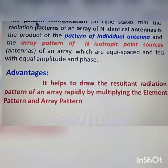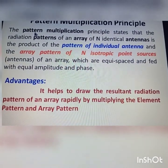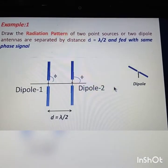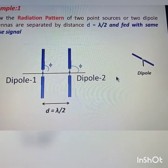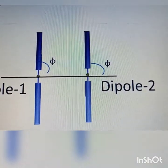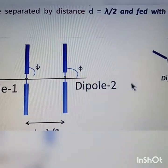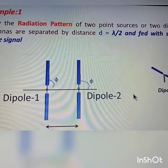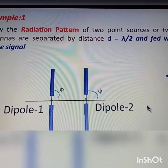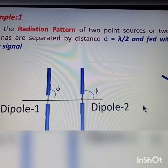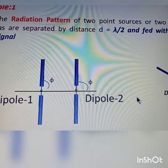Let us see how we can proceed for two-point, four-point, eight-point arrays and so on. Here I am considering two point sources — a two-point array — where two dipoles are separated by lambda by 2 and are equally spaced, fed with the same phase signal. This is a two-element array. First, we should know how to get the effective radiation pattern from the far field, so here I am estimating the resultant radiation pattern of the two-element array.